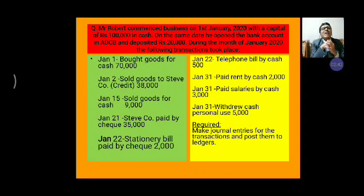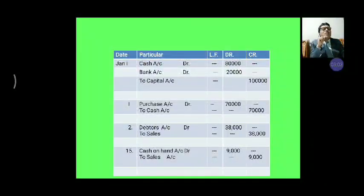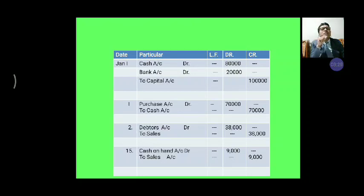With capital of Rs. 1 lakh in cash, and on the same date he opened a bank account in ADCB and deposited Rs. 20,000. Friends, now how to solve the problem? The problem will be solved with date, particulars, debit amount, and credit amount. Business started 1st January 2020. The amount introduced in the business is Rs. 1 lakh. But on the same date, out of Rs. 1 lakh cash introduced, the bank account will be opened. How many Rs. deposited into the bank?